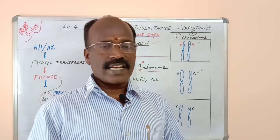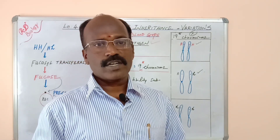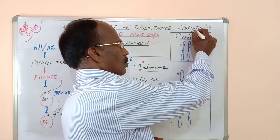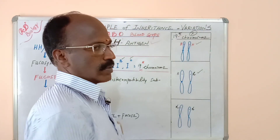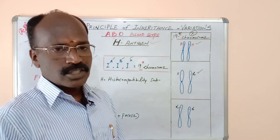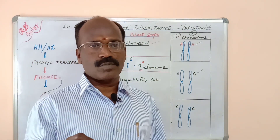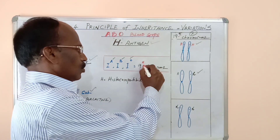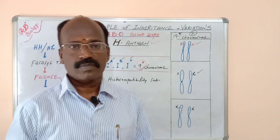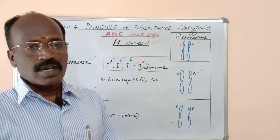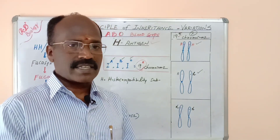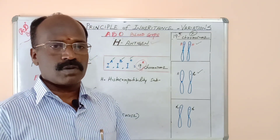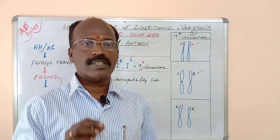This H antigen is synthesized by a pair of alleles found in the 19th chromosome — keep that in mind. The alleles responsible for antigen A and antigen B are found in the 9th chromosome. So the 9th pair and the 19th pair are both very indispensable for the formation of blood group antigens.